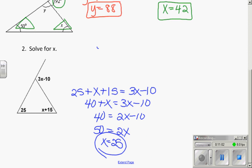Our last example is we have a similar, we have an exterior angle. And we have two remote interior angles. So we set up the interior angles equal to the exterior angles. Combine like terms. 40 plus X equals 3X minus 12. Subtract X from both sides. Add 10 to both sides. Divide by 2. And X is 25.